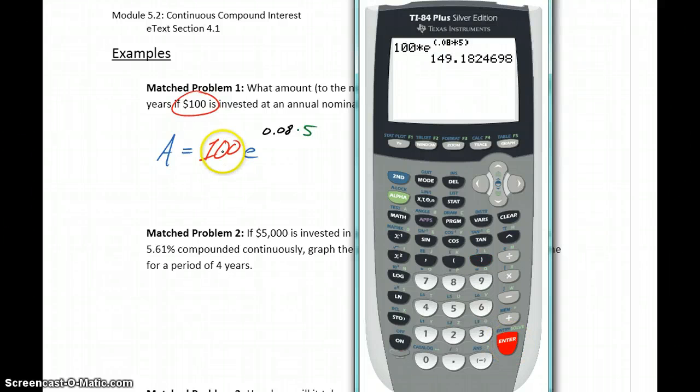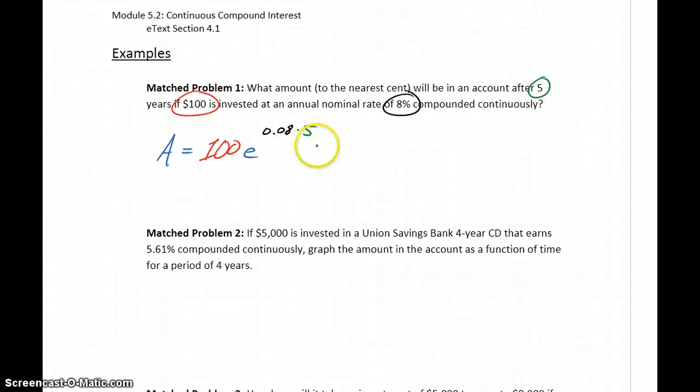So our $100 invested for five years with an 8% interest rate compounded continuously is going to give us a little over $149. So this comes out to approximately $149.18. So we're not told where to round this, but if we're dealing with money, we're not going to be given fractions of a cent. So we would always just round money to the nearest cent.